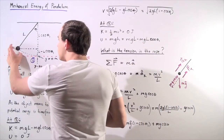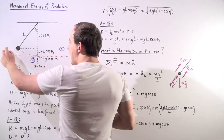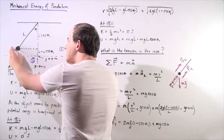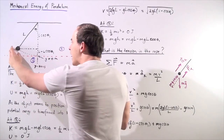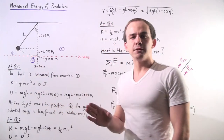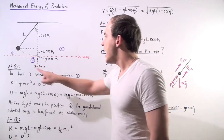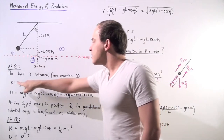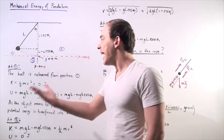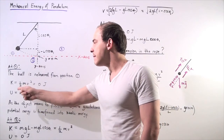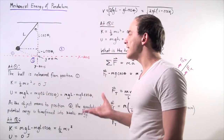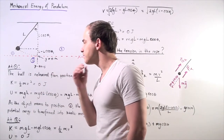If we position the ball at position one right before we release it, what are its mechanical energies? Right before release, the object is not moving — its velocity is zero — so at position one, the kinetic energy is also zero, because kinetic energy equals one half mv squared. Since v is zero, we have zero joules of kinetic energy at position one.